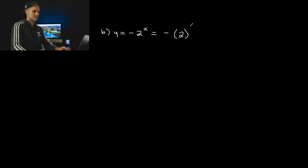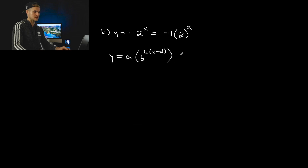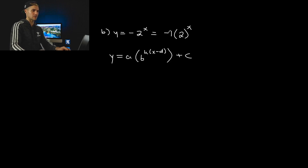Moving on to part b, we have y equals negative 2 to the power of x. Now, if you remember from grade 11 functions, this negative here — because it's not in a bracket — is not attached to the 2. There's an imaginary negative 1 in front. So we could rewrite this with the negative 1 in front. Any exponential function looks like this general form, and we'll go into graphing with transformations in a few sections. So the a-value here is negative 1, and then we have 2 to the power of x.